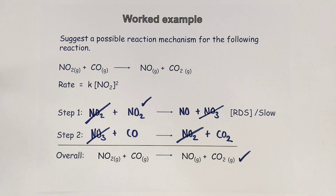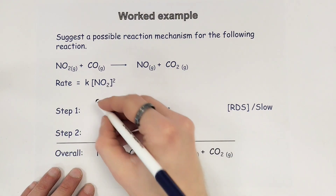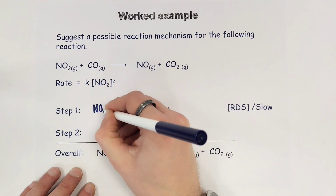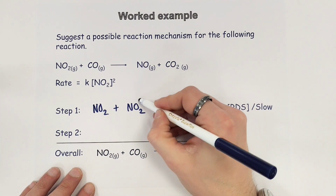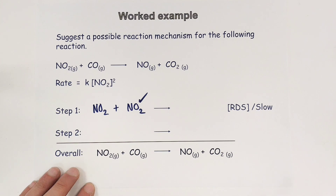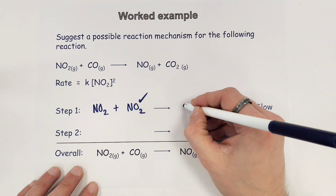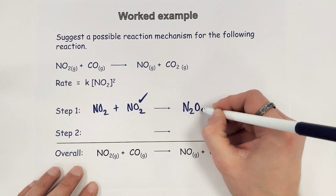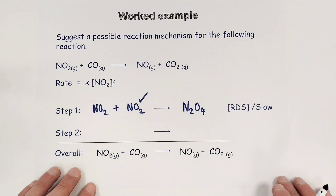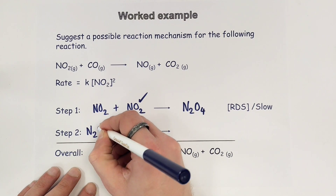Now I'm going to show you a couple of other versions of this worked example to show that there are multiple ways of solving the same problem. Starting again with two moles of NO2 in the rate determining step, this time I'm going to form a different product — N2O4, dinitrogen tetroxide. That doesn't appear in the overall equation, so I'm immediately going to start with that in step two to remove it.